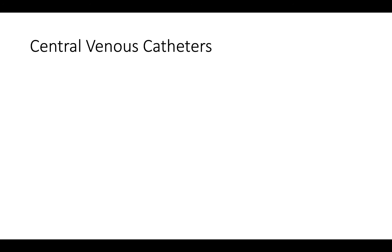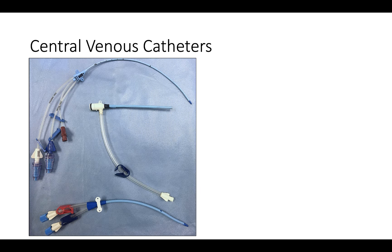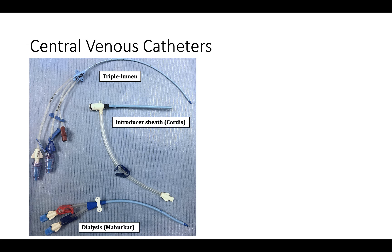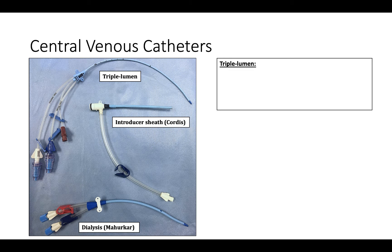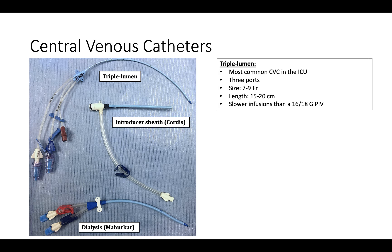There are three main types of central venous catheters: triple lumens, introducer sheaths, and dialysis catheters. The triple lumen is the most commonly utilized, with three separate lumens for medication and fluid administration. Triple lumen catheters are typically 7–9 French in diameter and 15–20 centimeters in length. Because of this significant length, the triple lumen is actually slower infusing than a 16- or 18-gauge peripheral IV, which is preferred for rapid volume infusions.